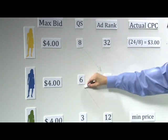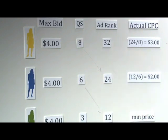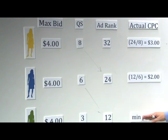In this case, it's going to be 12 divided by 6, or $2. And finally, for the last advertiser in this example, there's no advertiser below the last advertiser, so the price this person ends up paying per click is just the minimum price that's determined for that auction.